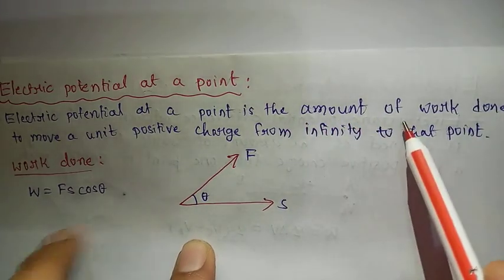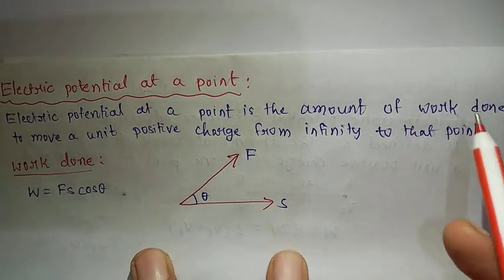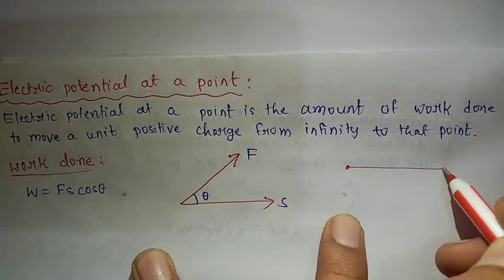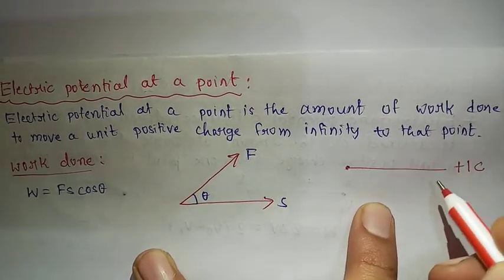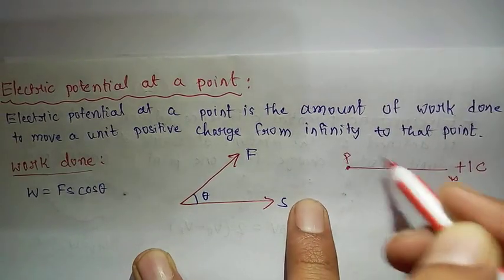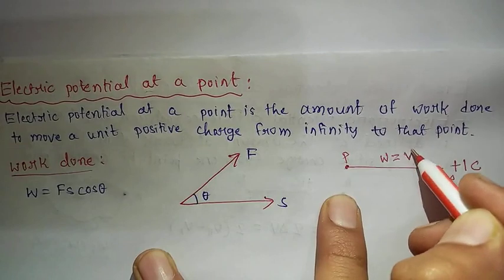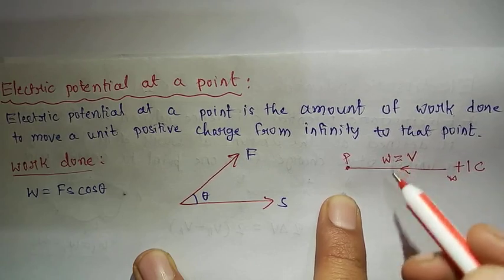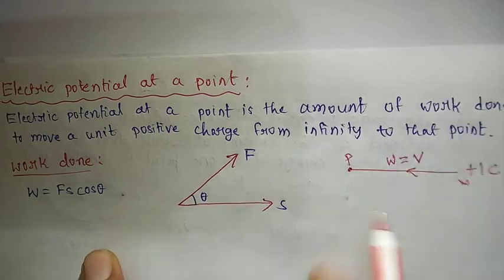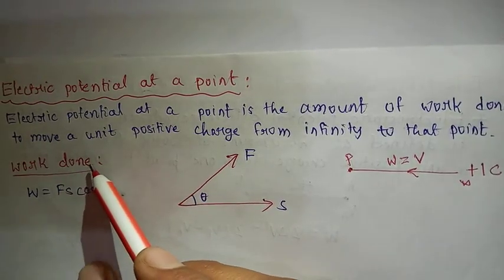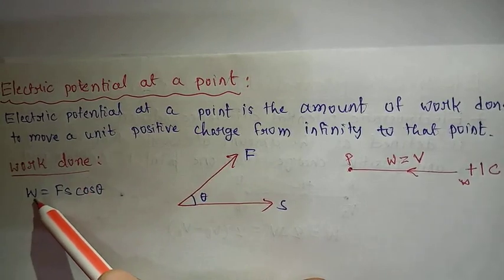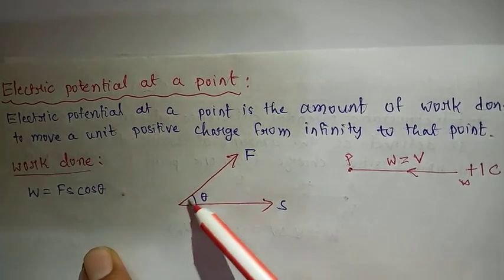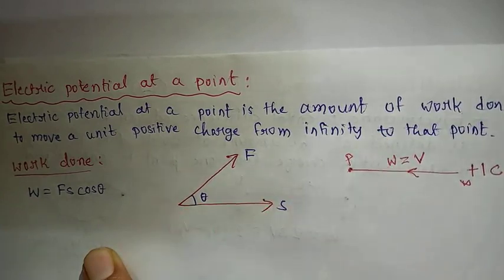We have to bring a unit positive charge — unit positive charge means one coulomb charge — from infinity to this point. The basic formula we use is the work done formula: W = F·s·cosθ, where force times displacement times cosine of the angle between force and displacement.